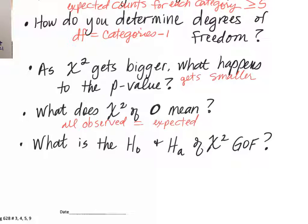Yesterday I had the smallest chi-squared value I've ever had in doing all of these labs in 10 years — 0.1229 by Caden. We need to document that.